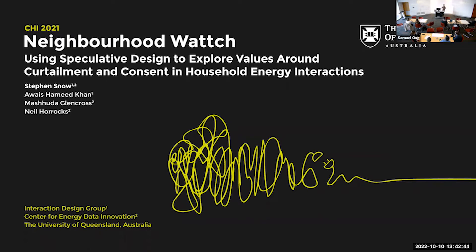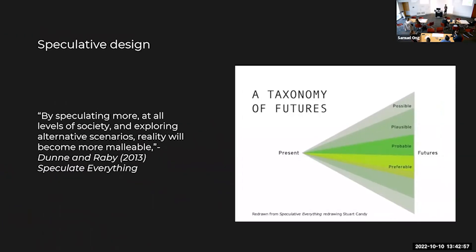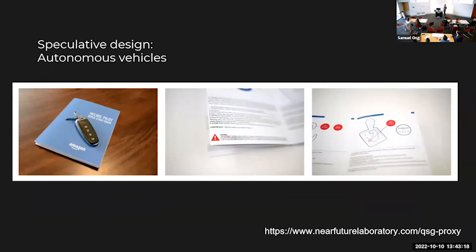The network would love everyone to use less, so there are a lot of behavioural nudges — but we as consumers say: hang on, I'm cooking dinner, I'm not turning off the stove. Speculative design looks at what's possible, plausible, probable, or preferable. It's all about future-looking: by speculating more at all levels of society and exploring alternative scenarios, reality becomes more valuable because people can't easily interact with what they don't know.